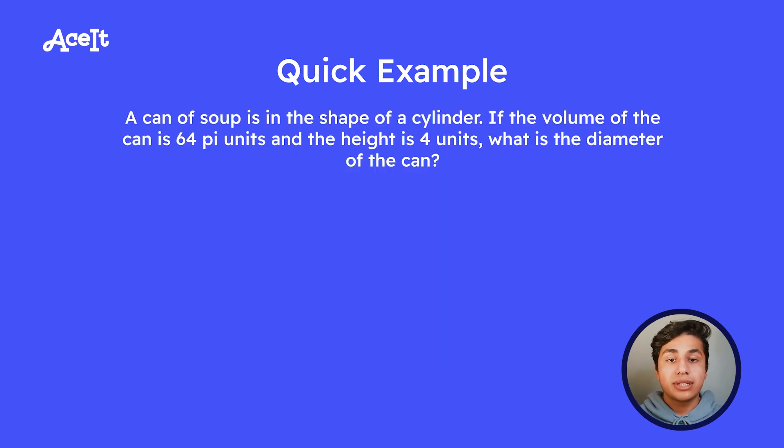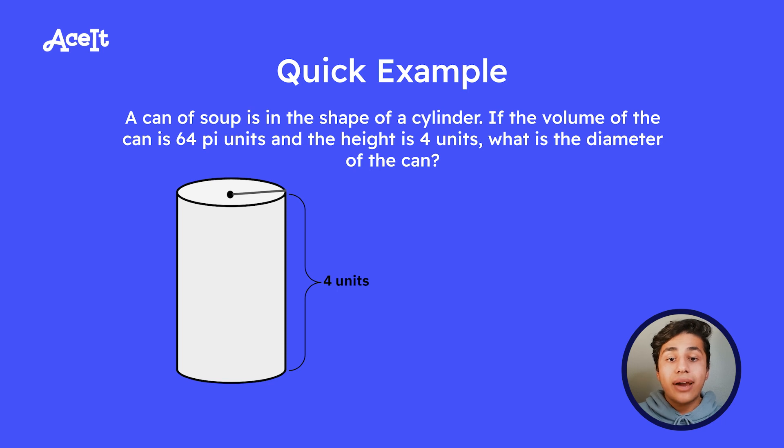A can of soup is in the shape of a cylinder. If the volume of the can is 64 pi units and the height is four units, what is the diameter of the can? So let's first try drawing out the cylinder and write down our equation. And then our next step is to plug in what we know. So we know we have 64 pi is going to be equal to pi r squared times four. So let's divide by four pi on both sides to try to solve for the radius. So doing the algebra, we'll end up finding out the radius is equal to four units. But you have to be careful because the problem is asking for the diameter, which is just double the size of the radius. So the answer to this question is going to be eight units.